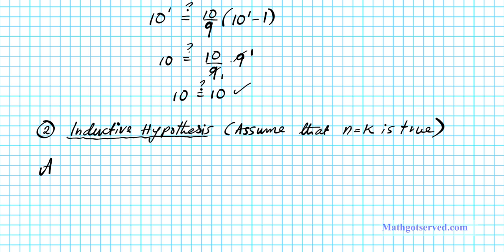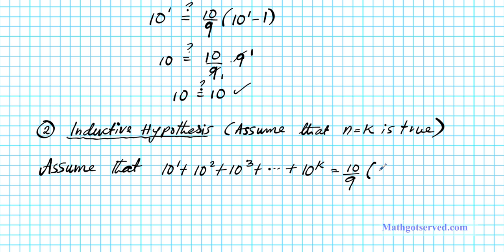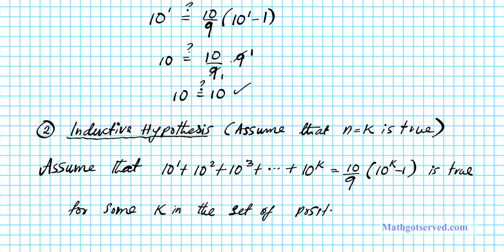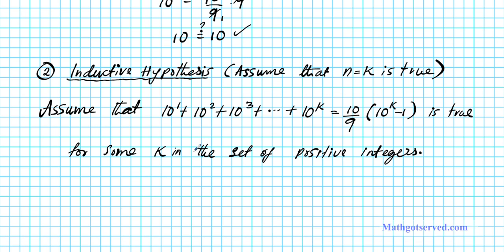For part 2, we're going to assume that 10 to the 1 plus 10 to the second power plus 10 to the third power plus dot dot dot plus 10 to the kth power is equal to 10 over 9 times 10 to the k minus 1. We assume this statement is true for some k in the set of positive integers. So we have the inductive hypothesis completed.